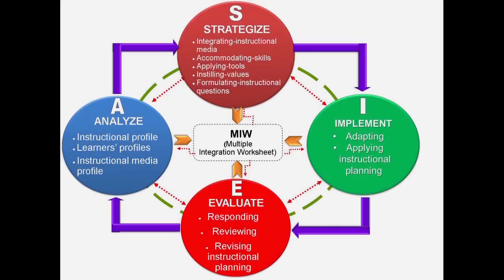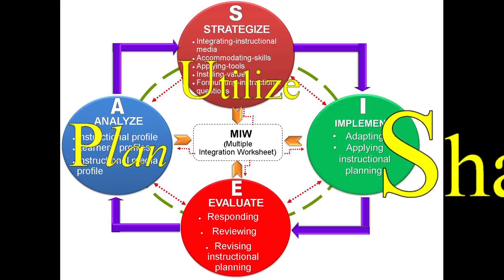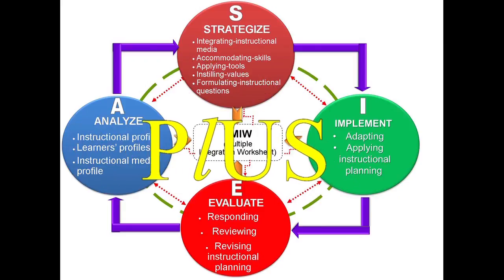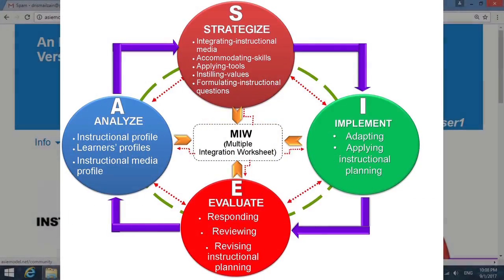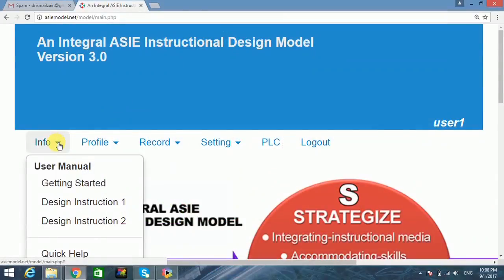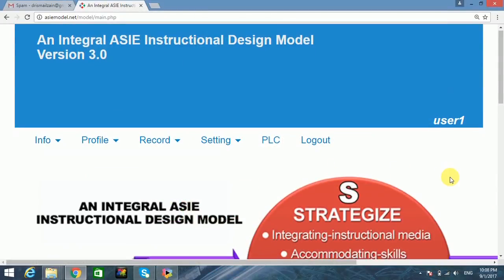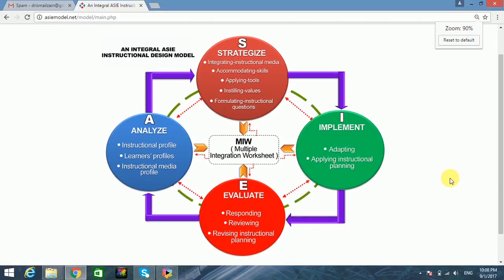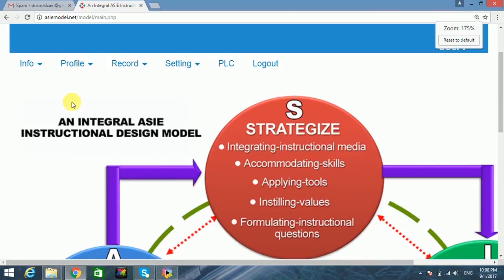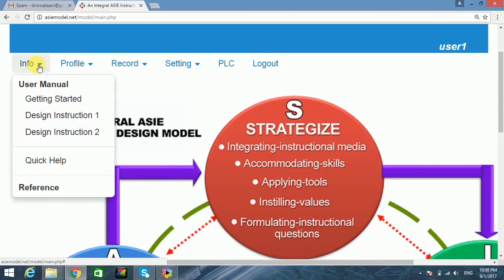The AC model provides teachers with instructional design tools allowing them to plan, utilize, and share instructional materials. There are two operational features: the main menu bar with menus for setting the instructional planning and the designing features in the four components of the model. The information menu provides a user manual as well as references assisting users in using the model.